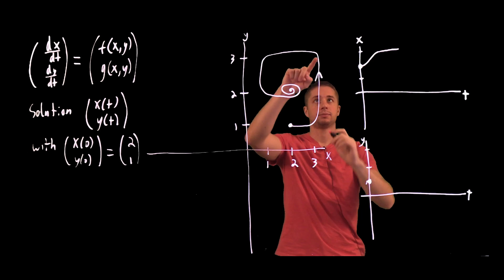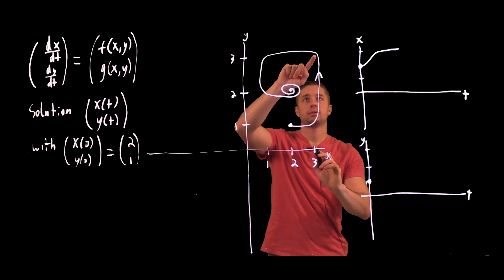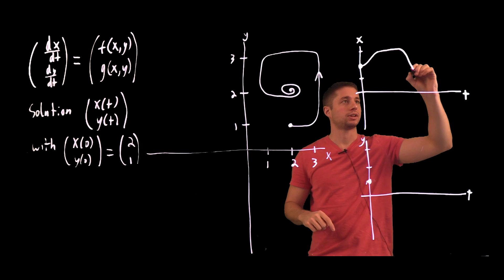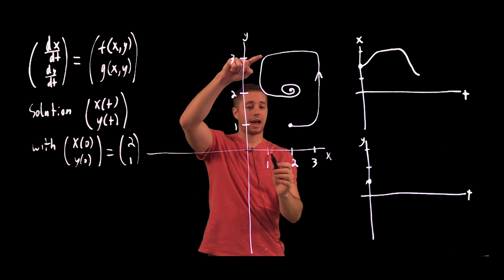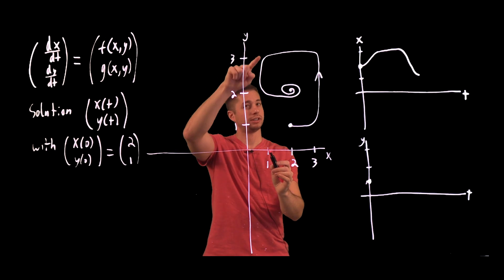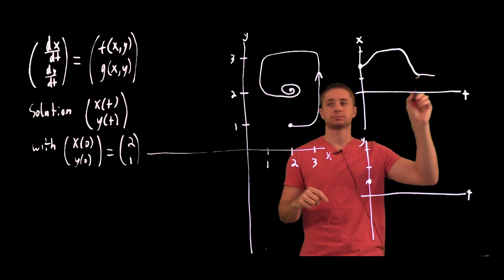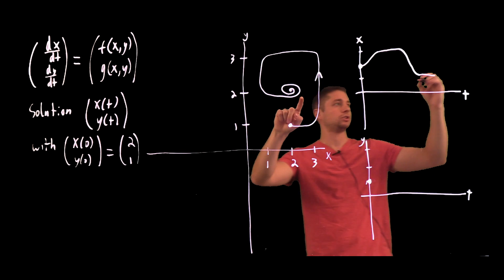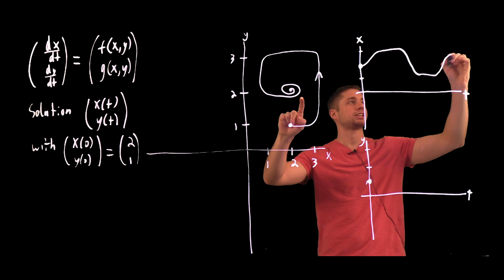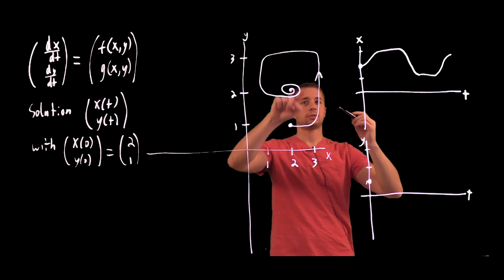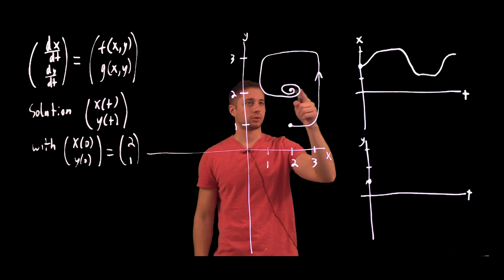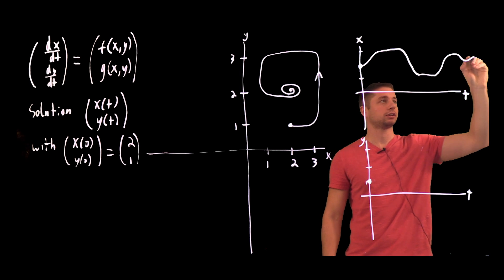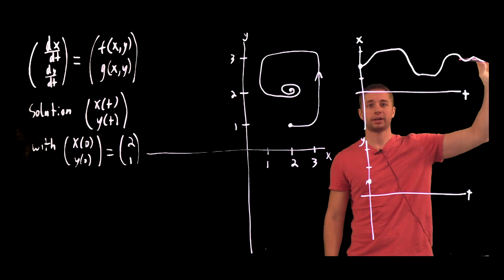It stays roughly constant for a while. Then our solution moves up here, and the x-coordinate decreases from 3 back to around 1. After that, for the next chunk of time, we're heading down, so the x-coordinate is again staying roughly constant for a little bit. Then we move along this curve to a little bit past x equals 2, stay constant briefly, and then clearly the x-coordinate moves back and forth, hovering and settling around x equals 2.